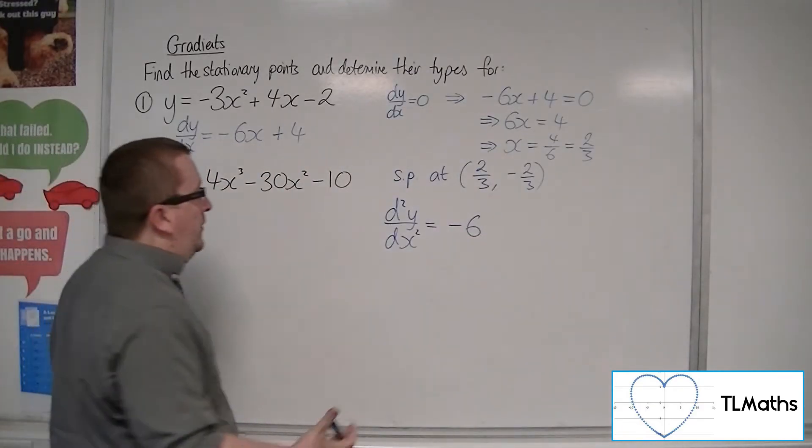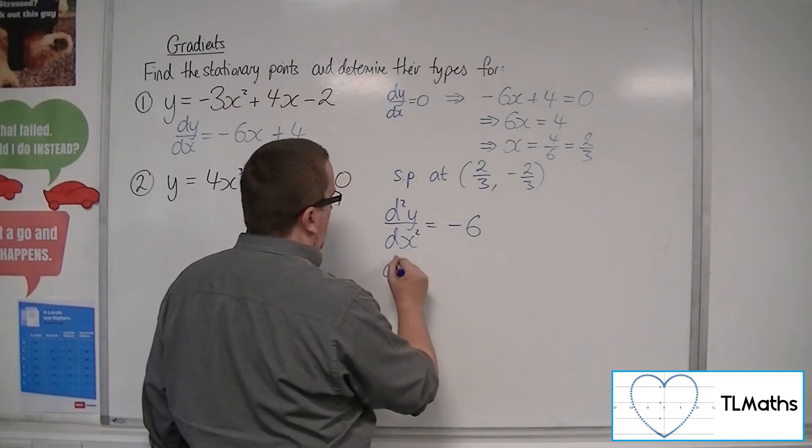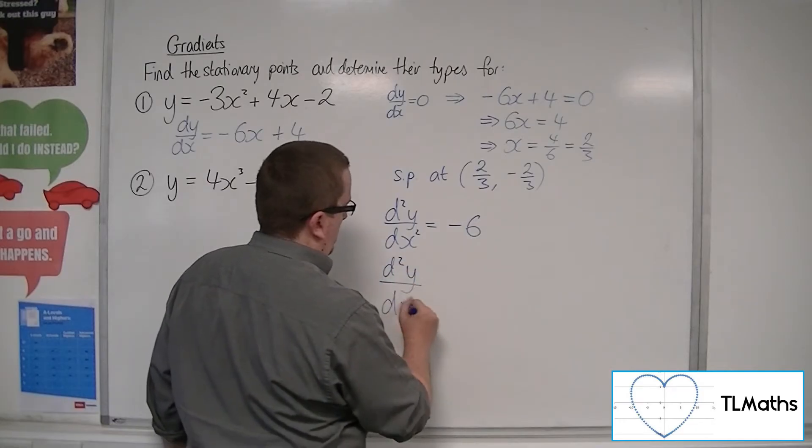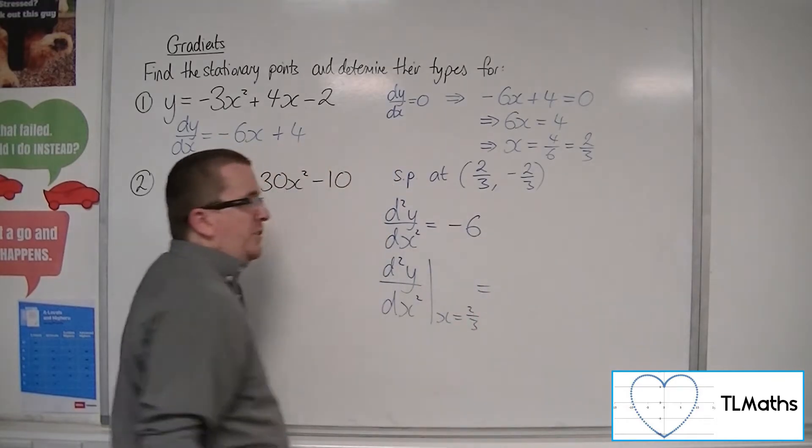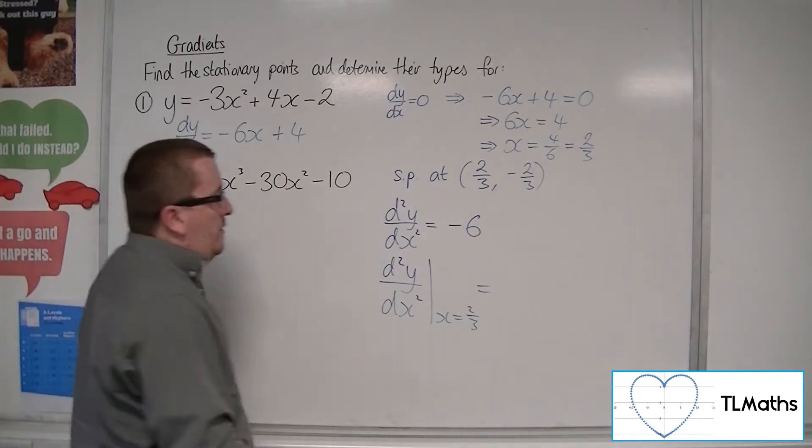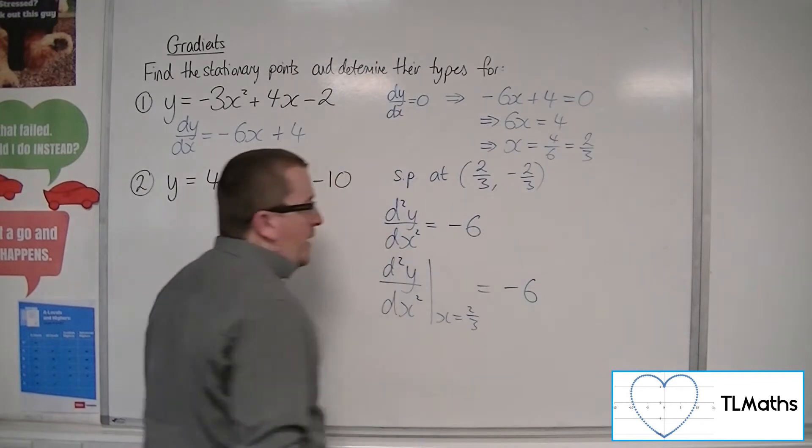Now minus 6, regardless of what I substitute into it, if I substitute x as 2 thirds into this, well, there's no x to substitute into. So the second derivative will just remain as minus 6.